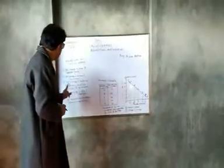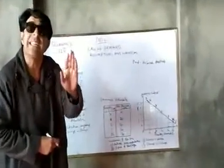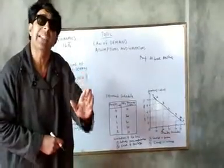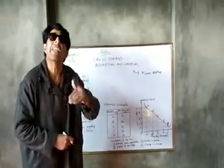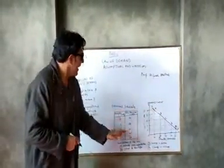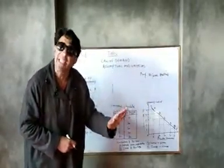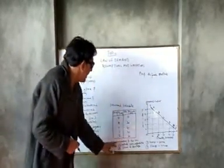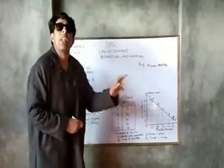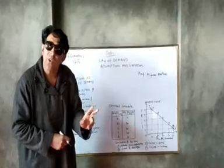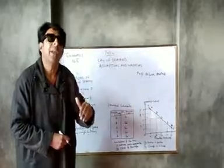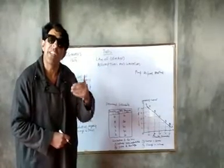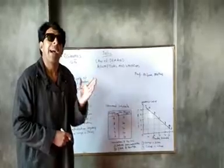Change in income is one more limitation. There should be no change in the income of a particular consumer, because a change in income brings a change in quantity demanded regardless of prices. These limitations explain that the law is not applicable when such conditions exist. Lastly, there are two more limitations — Veblen goods and Giffen goods — which will be explained in the next lecture. Thank you very much.